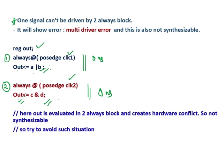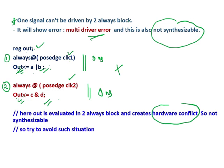You should never write code where one signal is driven by two always blocks. If you do, you will get an error called a multi-driver error, and this code is not synthesizable. Two always blocks driving a single signal creates a hardware conflict — it is unclear whether 'out' will be updated by the first or second block's value. Always avoid such situations.